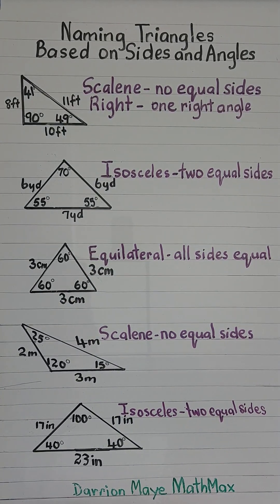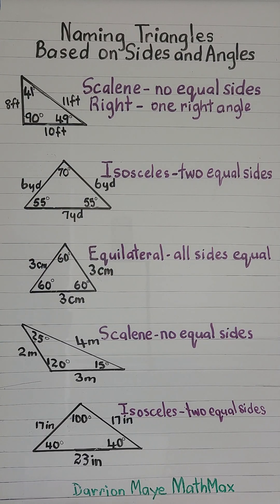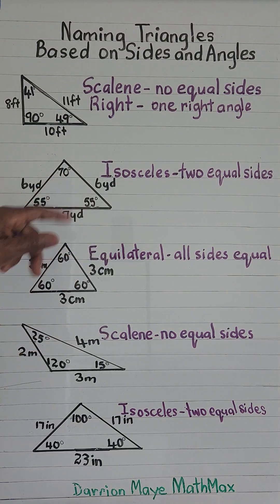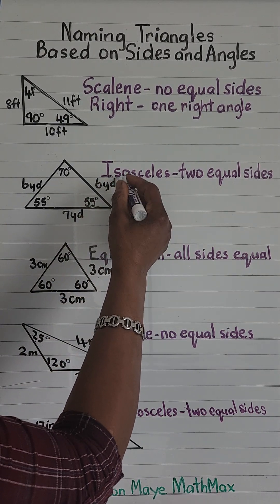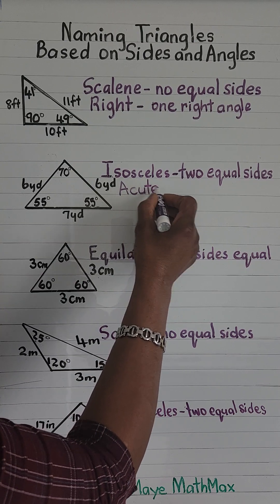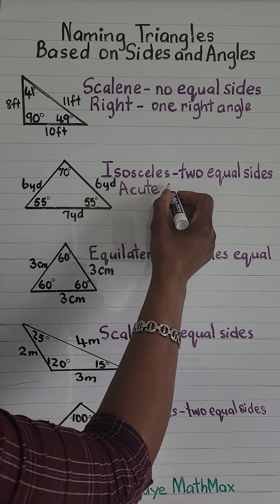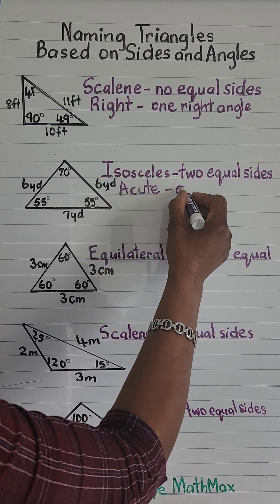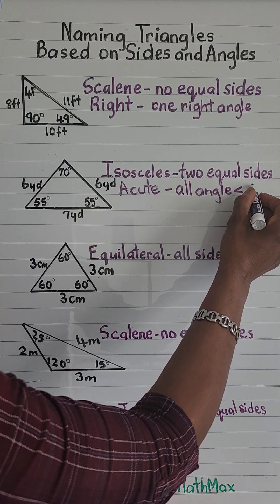Next we have 55 degrees, 55 degrees, and 70 degrees. All three angles are less than 90 degrees — less than a right angle. So we call this an acute triangle. All three angles are acute, meaning all angles are less than 90 degrees.